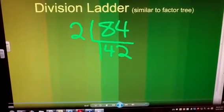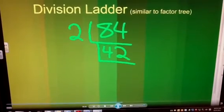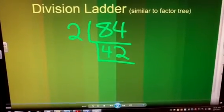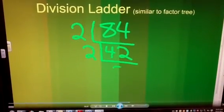Again, I need to start with the lowest prime number, two, and determine whether this number is divisible by two, and it is. 42 divided by two is 21.